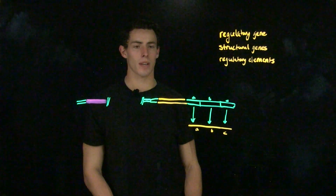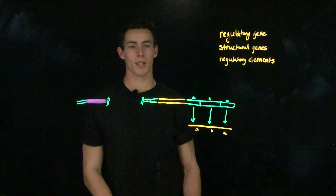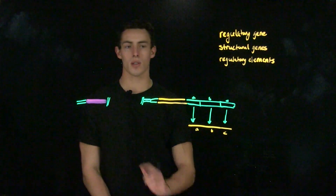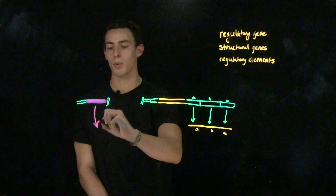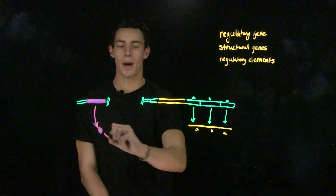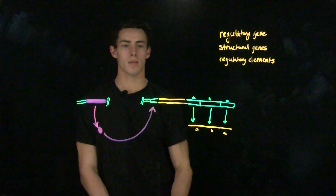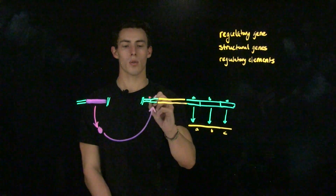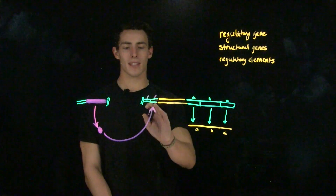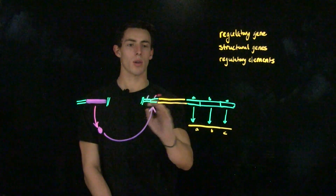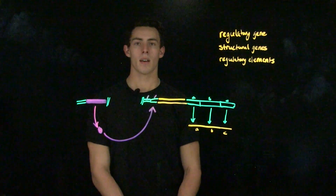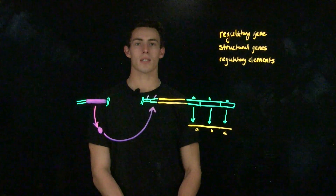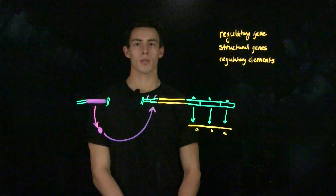In addition to structural and regulatory genes, we also have something called a regulatory element. We have two types of regulatory elements: cis-acting and trans-acting. A trans-acting regulatory element, such as a regulatory protein, may be produced at one site and may bind to an operator. Other regulatory elements, such as the operator or the promoter, are considered cis-acting because they are directly associated with the gene that they are encoding. The concept of cis- and trans-acting regulatory elements will be discussed further in a video over partial diploid mutations.